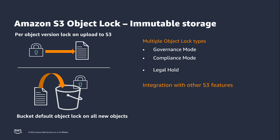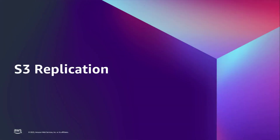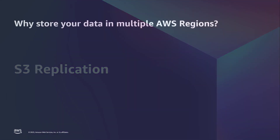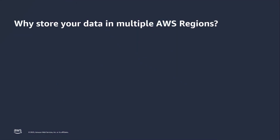Object Lock integrates with other S3 data protection features. Versioning must be enabled on the bucket, and Object Lock settings are applied to specific object versions. Lifecycle configurations continue to function normally on protected objects, with one notable exception: a lifecycle configuration will not be permitted to permanently delete an object version while it's being protected by Object Lock. Replication can be used to copy objects to another S3 bucket while retaining their retention metadata. This brings us to our next topic — S3 Replication, which enables automatic, asynchronous copying of objects across S3 buckets. Amazon S3 stores your data across multiple availability zones within an AWS region by default.